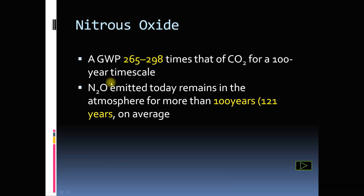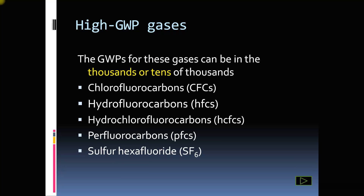Similarly, nitrous oxide (N2O) has a global warming potential of 265 to 298 over a 100-year period, and its residence time is 121 years. Then there are gases with very high global warming potentials, such as chlorofluorocarbons, hydrofluorocarbons, hydrochlorofluorocarbons, perfluorocarbons, and sulfur hexafluoride (SF6). These have GWPs in the thousands or even tens of thousands.